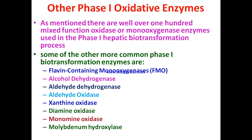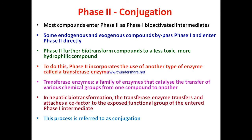Well over 100 mixed-function oxygenase enzymes are used in the phase one hepatic biotransformation process. Some of the other more common phase one biotransformation enzymes are flavin-containing monooxygenase (FMO), alcohol dehydrogenase, aldehyde dehydrogenase, aldehyde oxidase, xanthine oxidase, diamine oxidase, monoamine oxidase, and molybdenum hydroxylase.